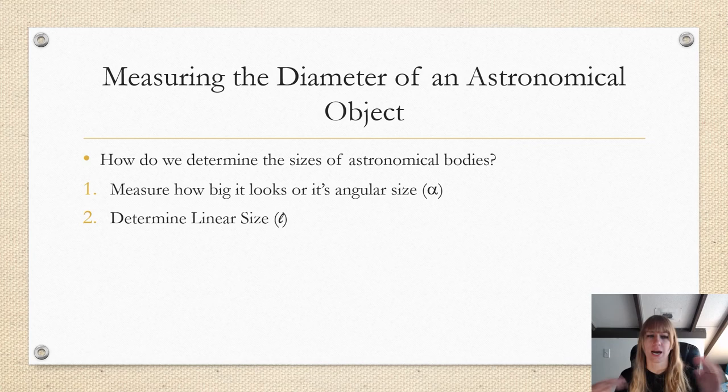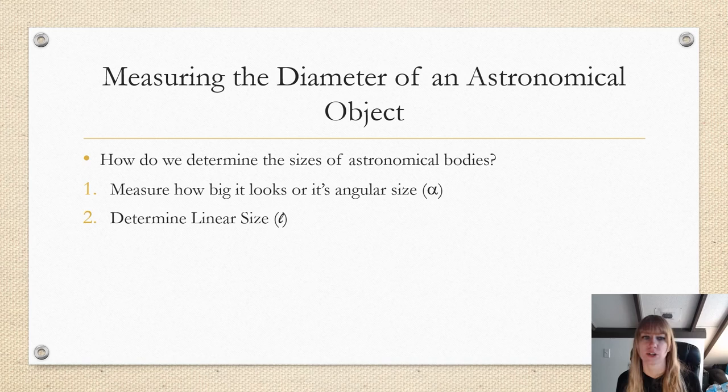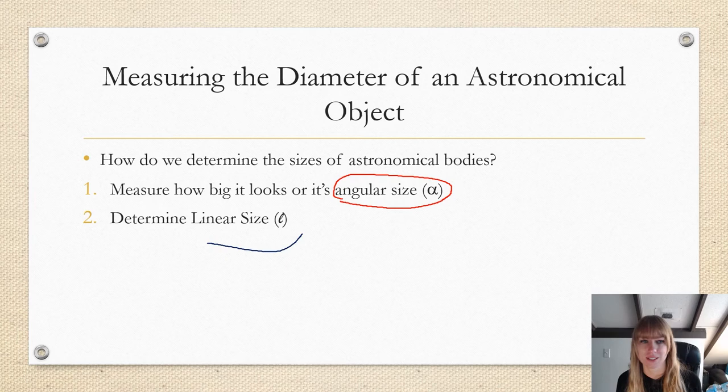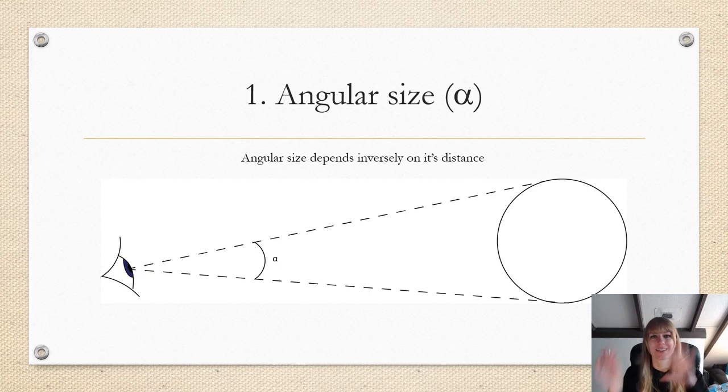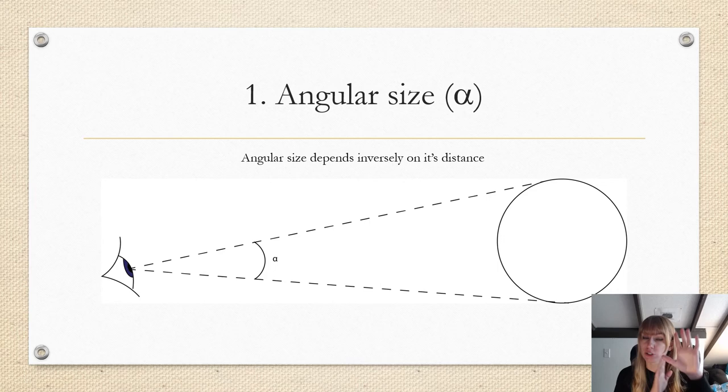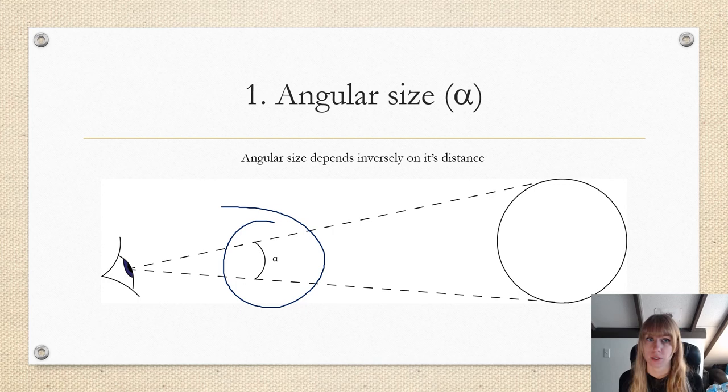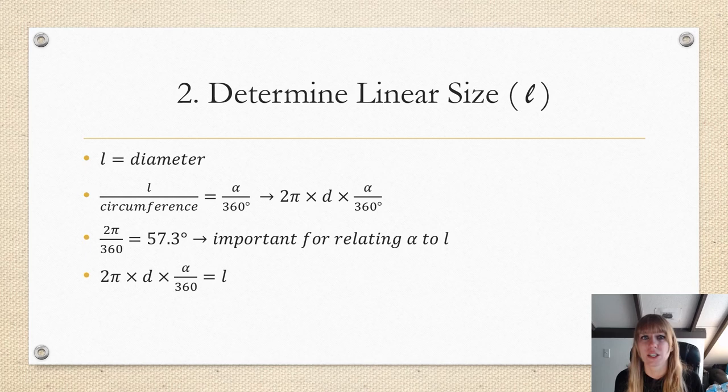Let's bring this forward. How do we actually determine the sizes of astronomical bodies? Well, there's two ways. One, measure how big it looks, or its angular size. And two, determine linear size. So with angular size, you're going to essentially use your eyeballs and you're going to look at something and you're going to draw an imaginary line to those things and then measure that angle with a protractor. This angle is known as alpha, and alpha is very dependent on how close you are because it's from your point of view. So angular distance is very dependent on how close you are to an object physically. The closer you are, the larger the angle. The farther you are, the smaller the angle. That means angular size depends inversely on its distance.